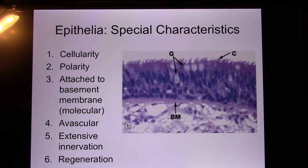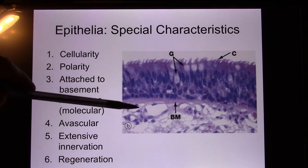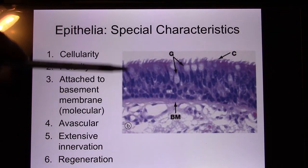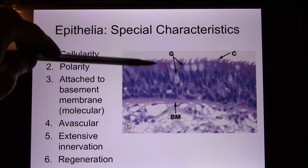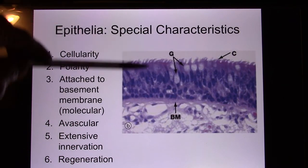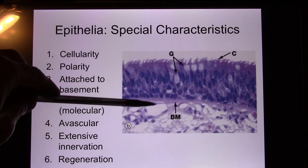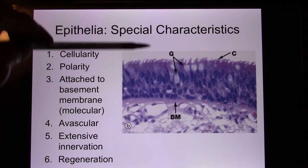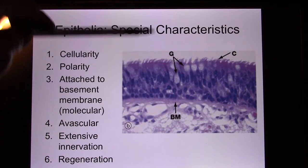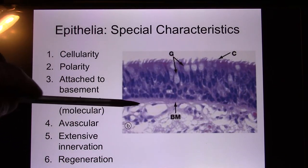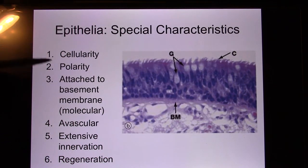Skin cancer happens more frequently in young adults, whereas usually cancer happens in older people. Next characteristic: polarity. Like the skin, one side faces the outside and one faces the inside, so the two sides are different — that's their polarity.